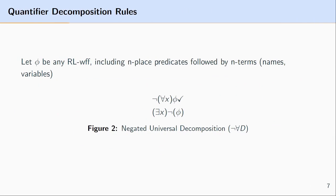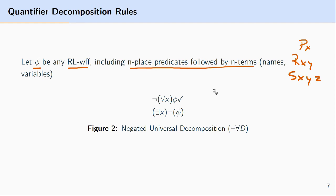The second predicate logic decomposition rule is negated universal decomposition. Again, we'll let φ stand for any predicate logic well-formed formula, including n-place predicates followed by n-terms. This is a slight simplification, but it'll work for explaining the rule. Negated universal decomposition applies to formulas where the main operator is the negation and the operator with the next most amount of scope is the universal quantifier.